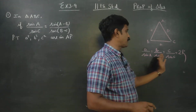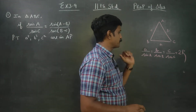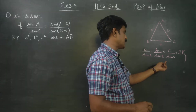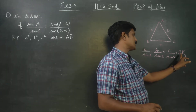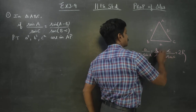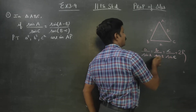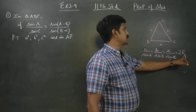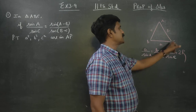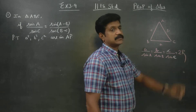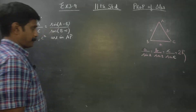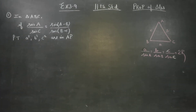It is a very famous formula — the sine formula: a/sinA = b/sinB = c/sinC = 2R, where R is the circumradius. Small a, b, c are the sides and capital A, B, C are the angles of the triangle.